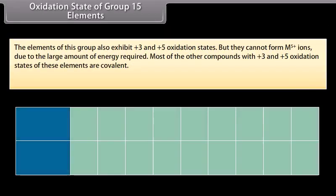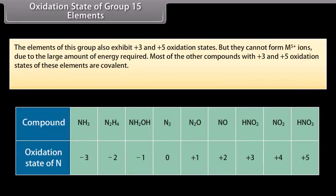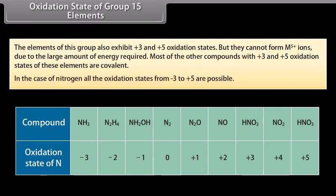The elements of this group also exhibit +3 and +5 oxidation states, but they cannot form M5+ ions due to the large amount of energy required. Most compounds with +3 and +5 oxidation states are covalent. In the case of nitrogen, all oxidation states from −3 to +5 are possible.